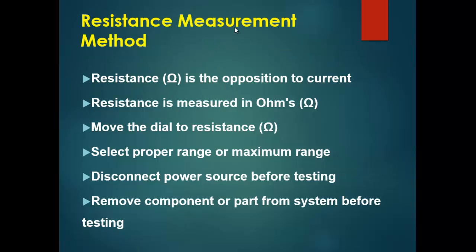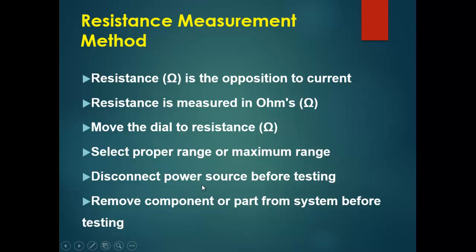Resistance is the opposition to current flow, and its symbol is ohm (Ω). For resistance measurement, first move the dial to resistance and select the proper range. If you are not sure about the range, select the maximum value. Always disconnect the power source before testing.